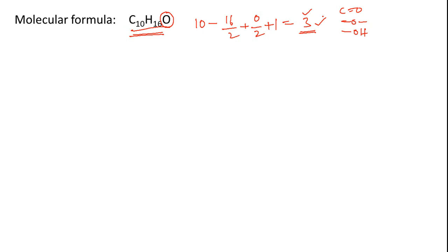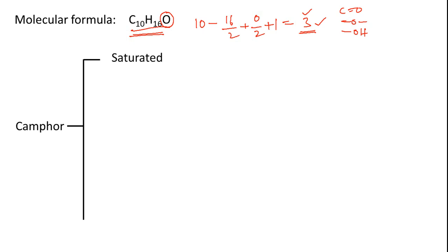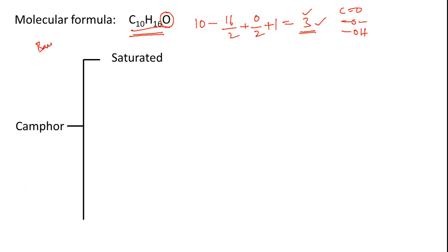Now we perform classical chemical tests. If we test camphor for unsaturation using Baeyer's test — cold dilute alkaline KMnO4 — and bromine water test, the compound does not decolorize either reagent. Hence the compound is saturated. If it is saturated, the 3 degrees of unsaturation must be accounted for by rings. This indicates that camphor has rings.